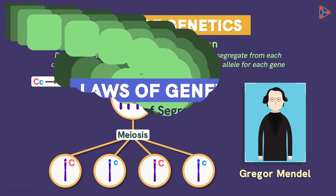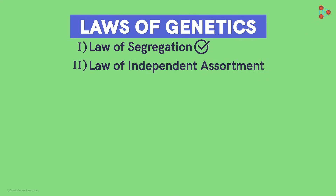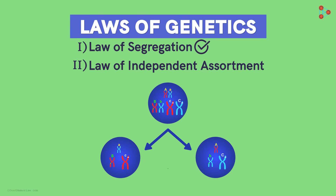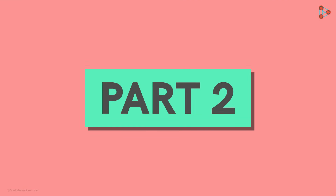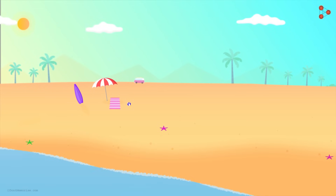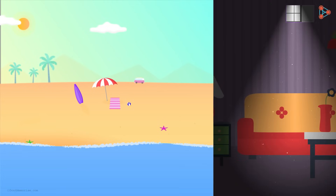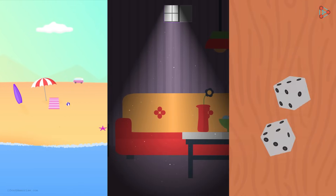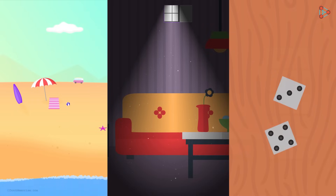The next law is the Law of Independent Assortment. Does this mean that the genes assort independently? There is one common thing among sea waves, dust particles, and a dice rolled on the floor — it's randomness! Randomness is commonly found in nature and in several things around us.